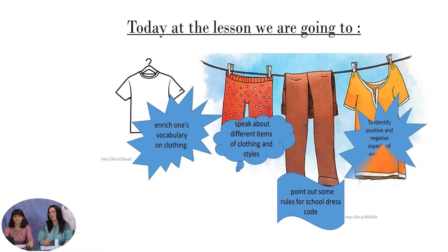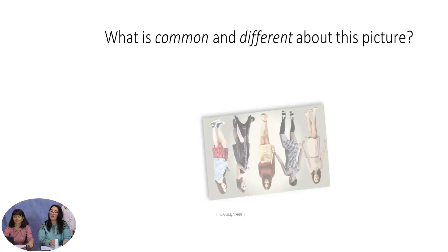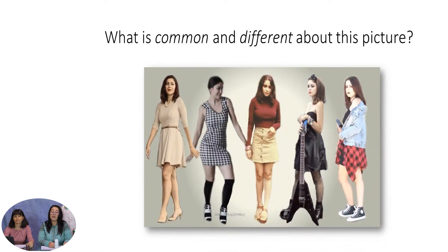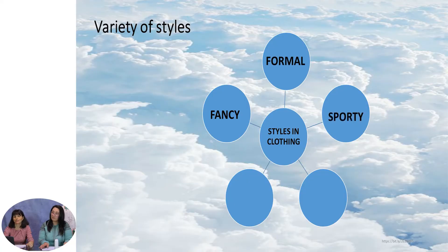We will also identify positive and negative aspects of wearing a school uniform. Have a look at this picture — let's brainstorm what is common and different about it. We see the same person wearing clothes of different styles. What styles are you familiar with? There is a variety of styles like fancy, formal, sporty, trendy, and casual for everyday needs.